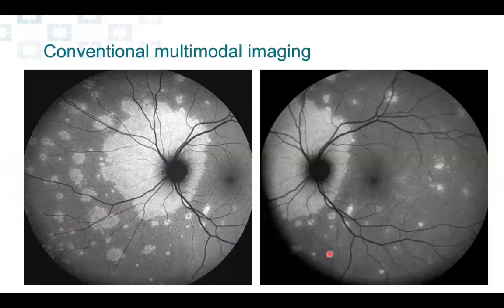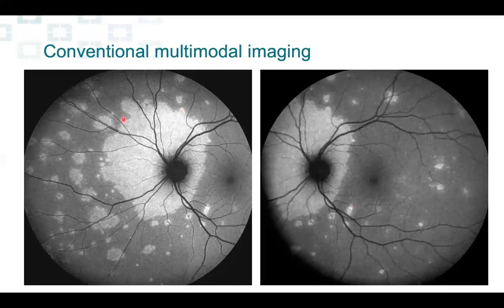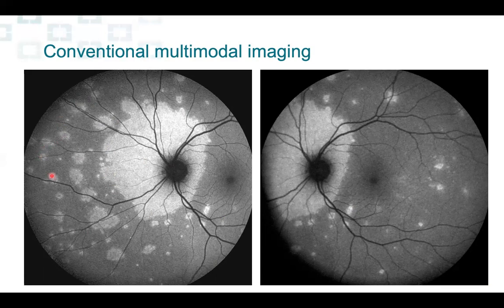When you see such posterior uveitis, you go straight for autofluorescence. Autofluorescence shows hyper-autofluorescence corresponding to the annular disease around the nerve. It's a disease of the ellipsoid zone — the photoreceptors — just unmasking the underlying normal autofluorescence of the retinal pigment epithelium. The satellite lesions that were difficult to see on the fundus photo are very clear here, corresponding to areas of photoreceptor loss and unmasking of RPE autofluorescence.